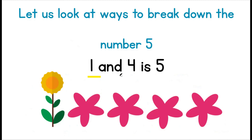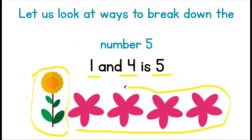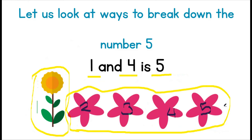One and four is five. We have one sunflower and four pink flowers. Let us see how many they make together: one, two, three, four, and five. This means that one and four is five.